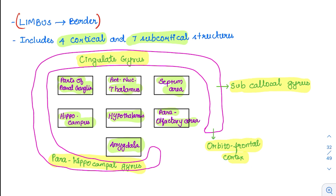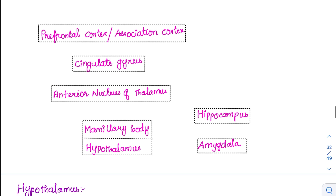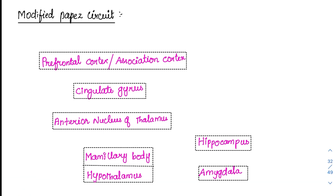That circuit is called the Papez circuit, and nowadays there is a version called the modified Papez circuit, which is the most advanced and recent finding. The difference between the original Papez circuit and the modified Papez circuit is that the amygdala is included in the modified version.